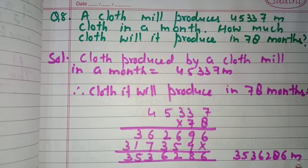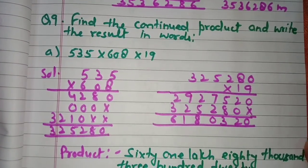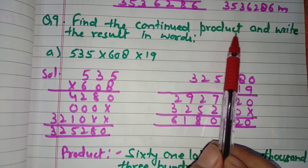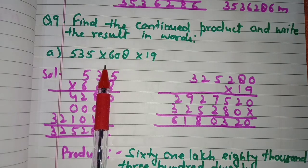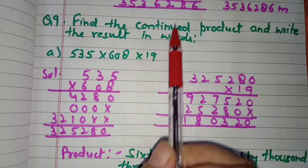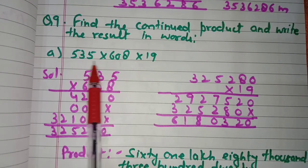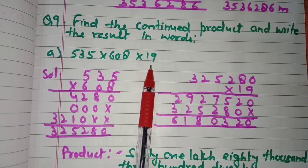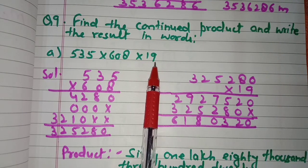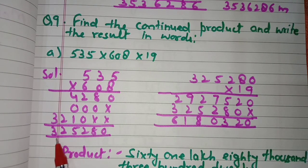Question number nine: find the continued product and write the result in words. We are given three numbers and need to multiply all three. First, we multiply the first two numbers, then multiply that product by the third number. Let us multiply 535 by 608 and get 3,25,280.